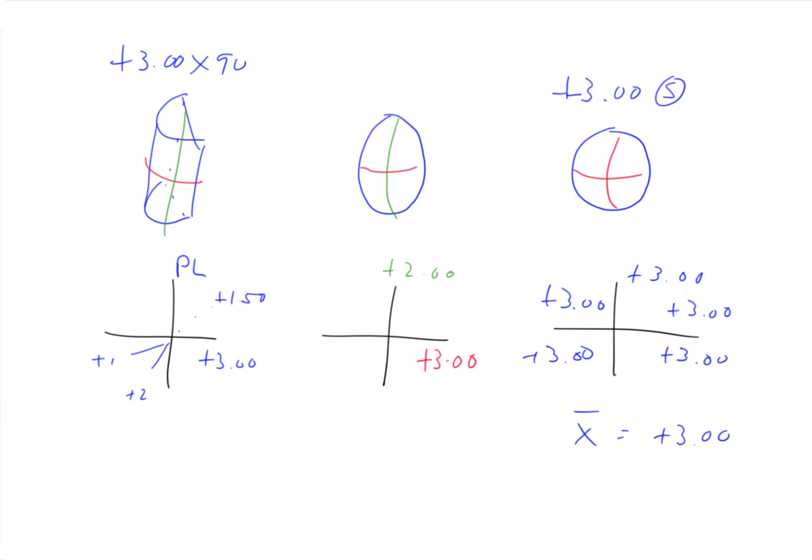Okay, so now what we have is, our lowest power is plus two, and our highest power is plus three. So what are we going to have halfway in between?